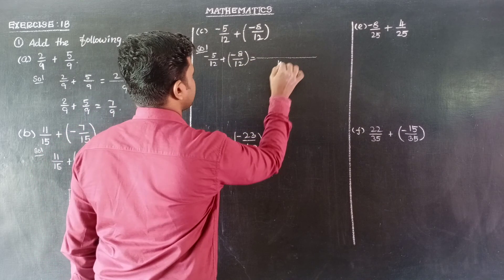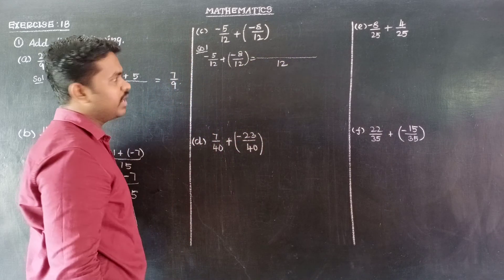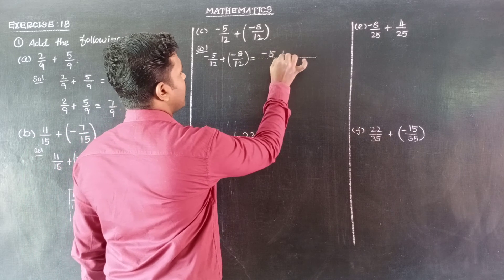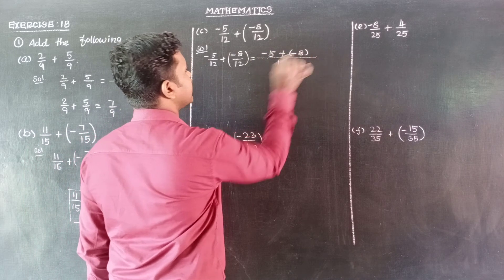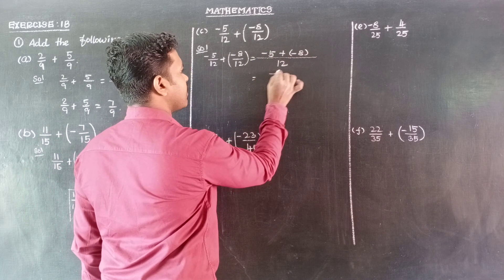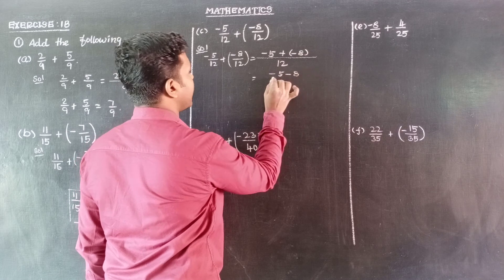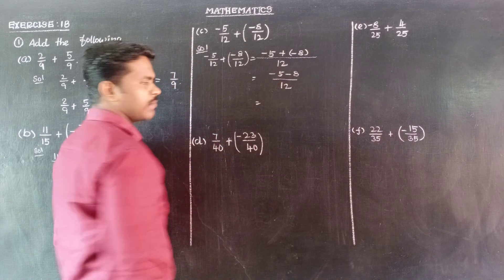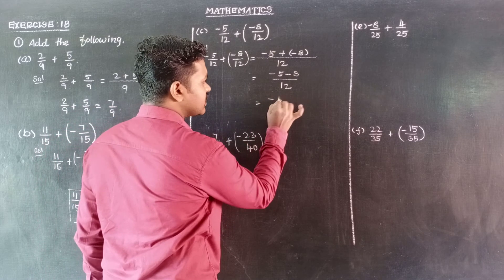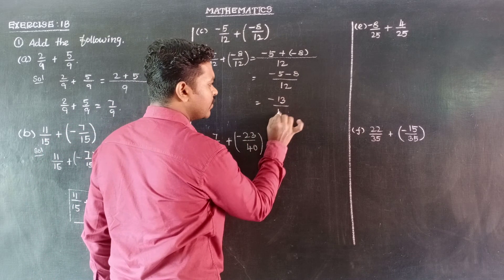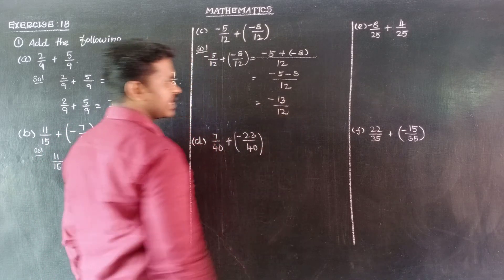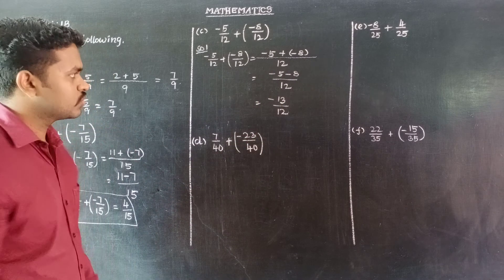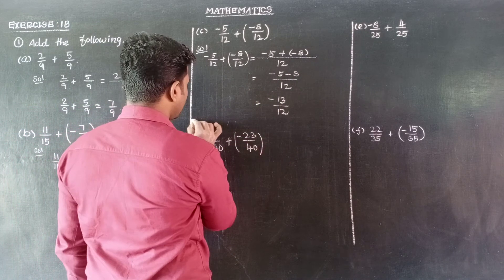So denominators are same, so we can write one thing as a common denominator. So numerator: minus 5 plus minus 8. Plus into minus is minus, so minus 5 minus 8 divided by 12. Minus 5 minus 8 added gives minus 13. Same sign added, different sign subtraction. So the answer is minus 13 by 12.